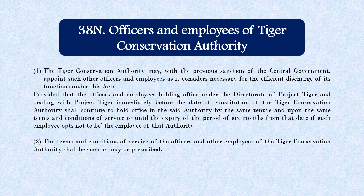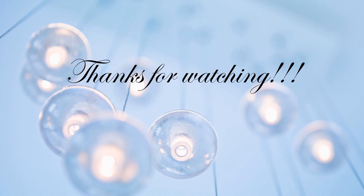The central government appoints the officers and employees. They can hold their office or service until the expiry of a period of six months from the date if such an employee opts not to be an employee of that authority. That is all for today — thank you for listening.